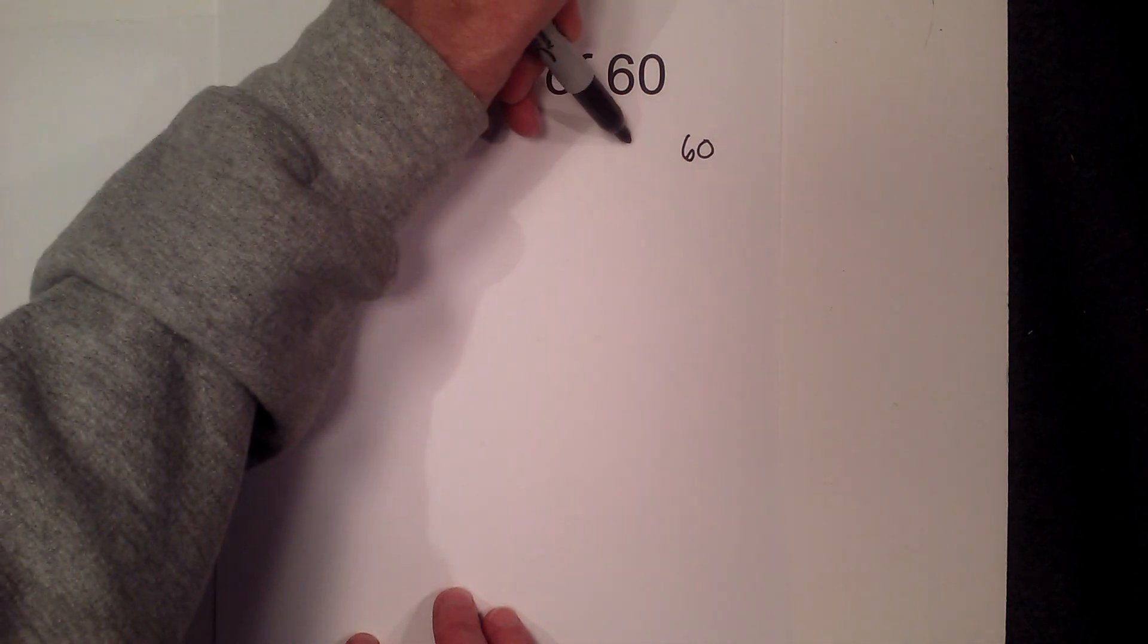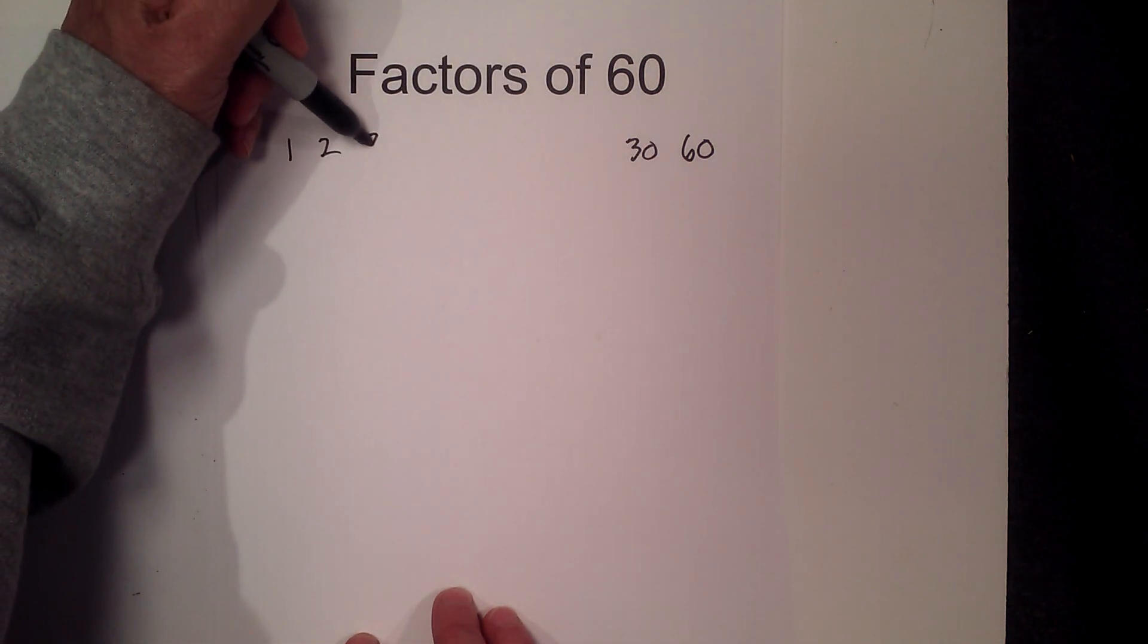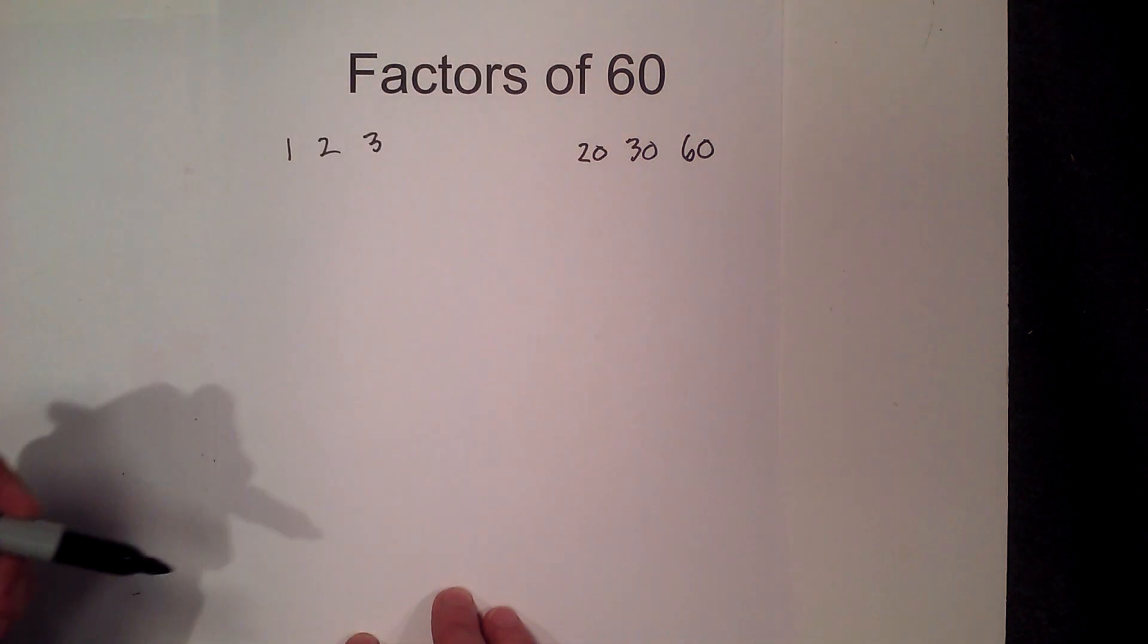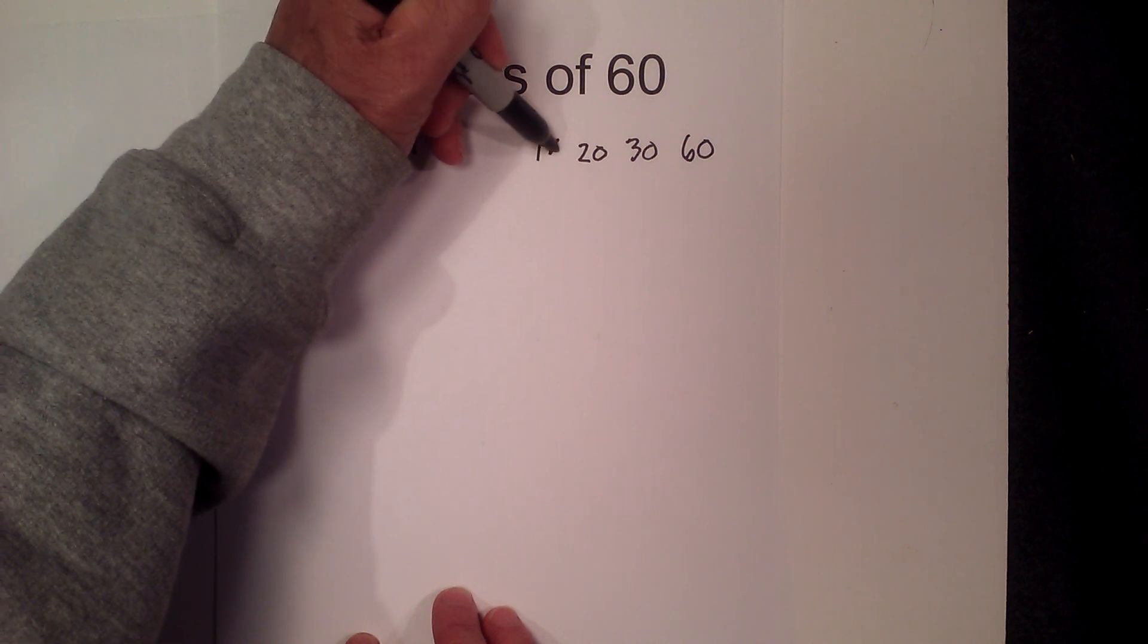If you take 2 times 30 that equals 60, 3 times 20 equals 60, 4 times 15.